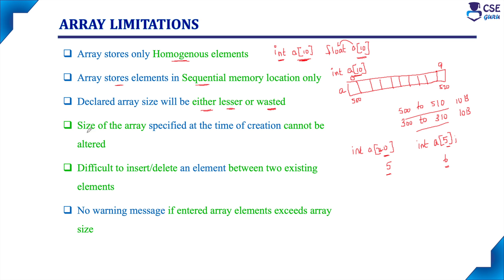Next, the size of the array specified at the time of creation cannot be altered. If I have declared the array int a of 10, during execution if I want 15 memory locations, I cannot alter the size because I have declared only 10 memory locations. So the size cannot be altered during execution. This is another disadvantage.